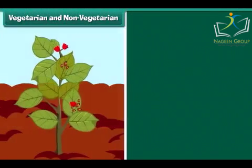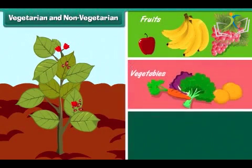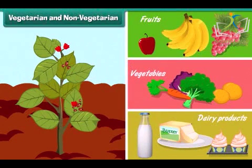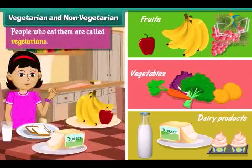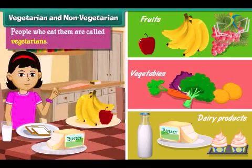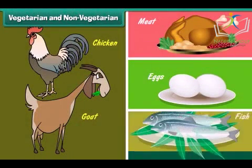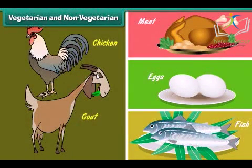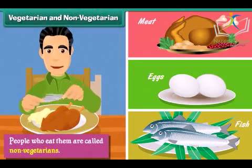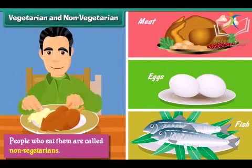Plant products like fruits, vegetables and dairy products are vegetarian food. People who eat them are called vegetarians. Animal products like meat, eggs and fish are non-vegetarian food. People who eat them are called non-vegetarians.